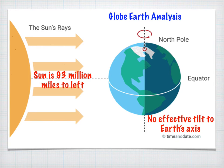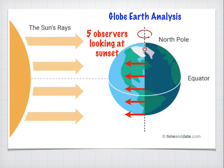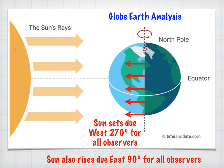The globe Earth analysis is a little different, because in the heliocentric model, the sun is 93 million miles off screen to the left. On the date of the equinox, there's no effective tilt to the Earth's axis. Placing five observers on the Earth, they're all looking at sunset as the Earth turns to the right in this image — they're in the lit portion, just about to go into the unlit portion. They are all looking due west. So the sun is setting at 270 degrees for all observers, and the sun also rises at 90 degrees on the other side — and this is true for anywhere on the globe.